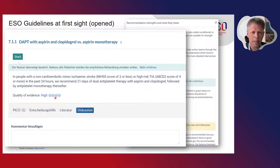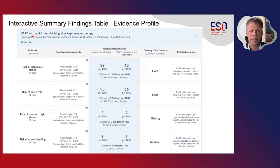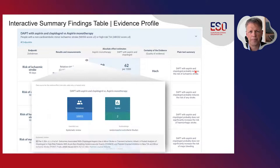By clicking on the menu below, you will be taken to the interactive summary findings table and evidence profile. For example, for the risk of ischemic stroke, you'll be informed on the relative risks, the absolute effect estimates — which is typically what you're most interested in — the certainty of evidence, and also a plain text summary. By clicking on a further icon, you can obtain additional information underpinning this summary, which would also guide you in discussions with patients.